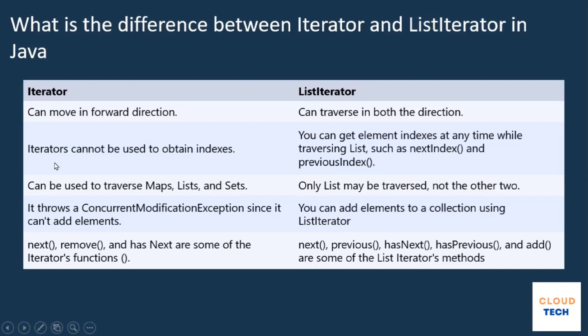The second point is that iterators cannot be used to obtain indexes. While traversing, if you want to get the index of an element, there is no facility in iterator to do so. But in case of list iterator, you can get the index of the element using methods such as nextIndex() and previousIndex().